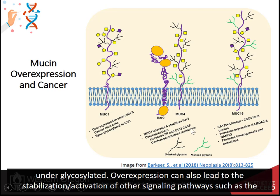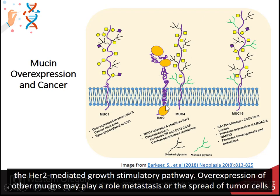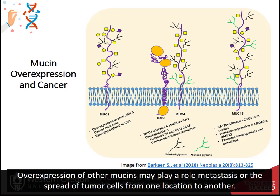Overexpression can also lead to the stabilization or activation of other signaling pathways such as the HER2-mediated growth stimulatory pathway. Overexpression of other mucins may play a role in metastasis, or the spread of tumor cells from one location to another.